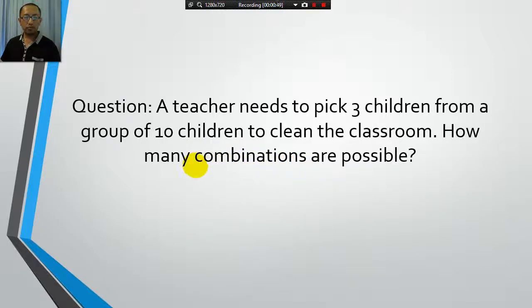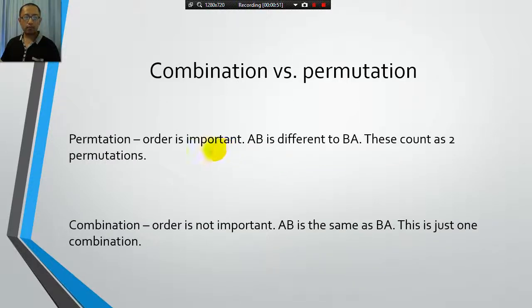Notice we're using the word combinations. Previously we were using the word permutations. So what is the difference? Permutation is when the order is important. So if we have a sequence of letters, let's say we just have two letters A and B, if we rearrange it to B and A, then AB, BA they count as two permutations, because they have a different order.